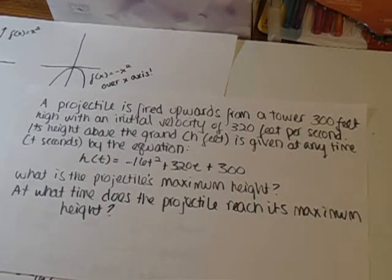A projectile is fired upwards from a tower 300 feet high with an initial velocity of 320 feet per second. Its height above the ground in feet is given at any time t seconds by the equation h(t) equals negative 16t squared plus 320t plus 300. The question is asking for its maximum height and what time it reaches that height.